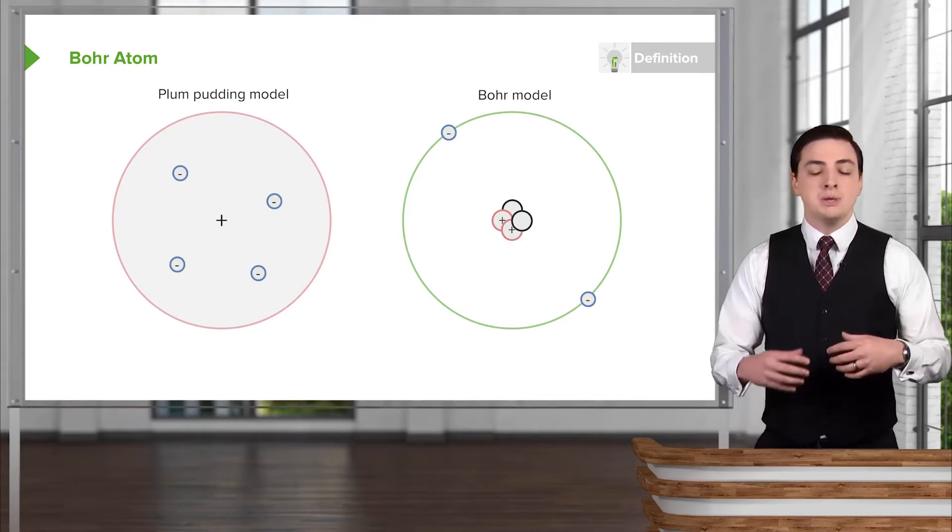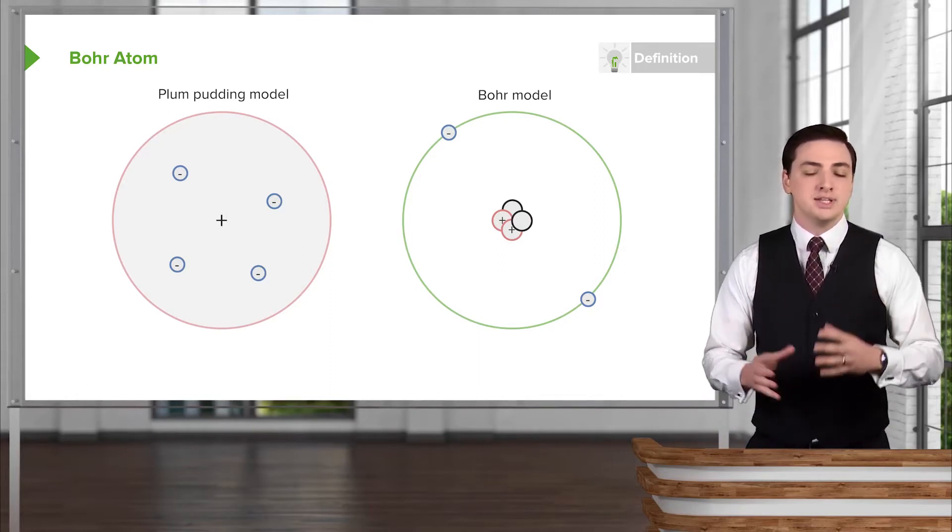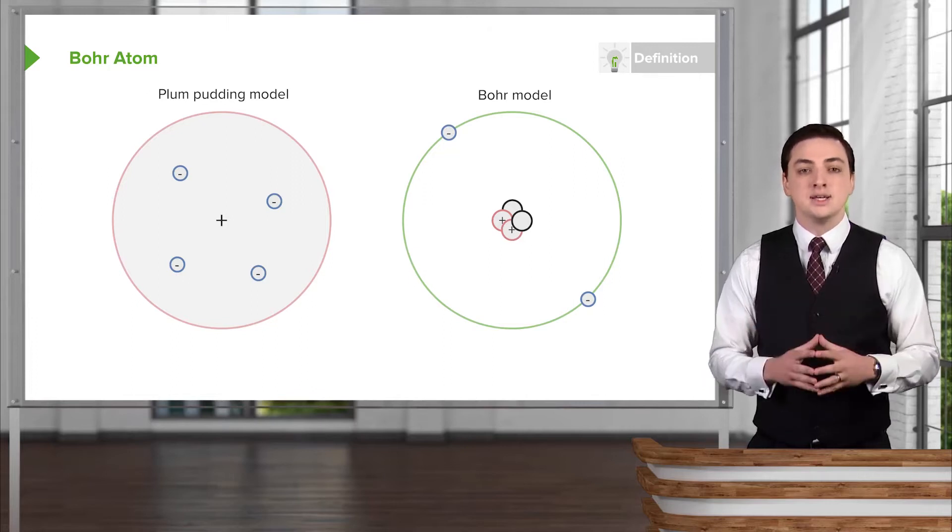Historically, originally, people knew that there were positive and negative charges from experiments, but they didn't really know how those were organized in an actual atom.